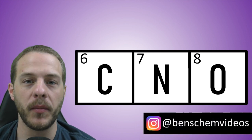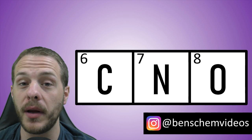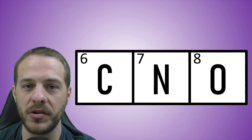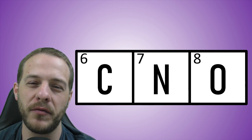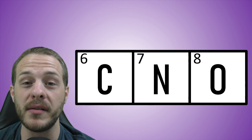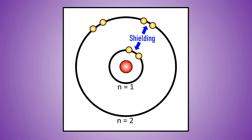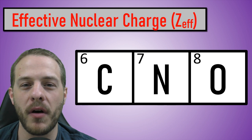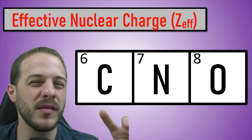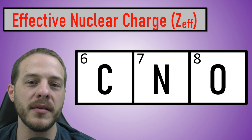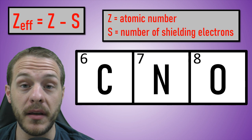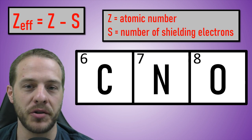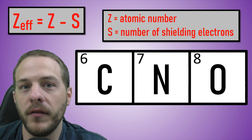What happens to electronegativity as you move from left to right across a period? Consider carbon, nitrogen, and oxygen, all of which belong to the second period of the periodic table. Going one step to the right across a period adds one proton to the nucleus, making it more positively charged. The valence electrons don't feel the full attractive force coming from that nucleus because in all three of these elements, there are also two core electrons that are shielding the valence electrons from the full effect of that positive charge. The effective nuclear charge is a term that describes the positive charge that the valence electrons feel, and it can be approximated using the formula Z_eff = Z − S, where Z is simply the atomic number and S is the number of shielding electrons — basically just the core electrons, the inner shell electrons, the non-valence electrons.